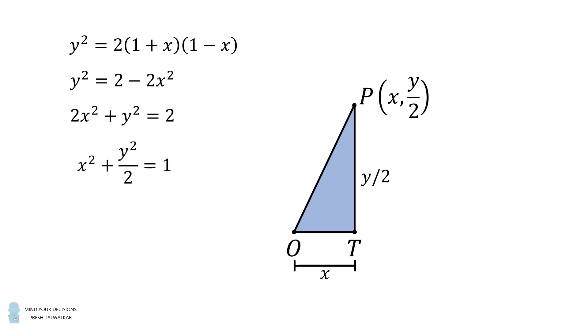Then dividing both sides by 2, we get x squared plus y squared over 2 is equal to 1. We can further rewrite this as x squared plus 2 multiplied by the quantity y over 2 squared is equal to 1.